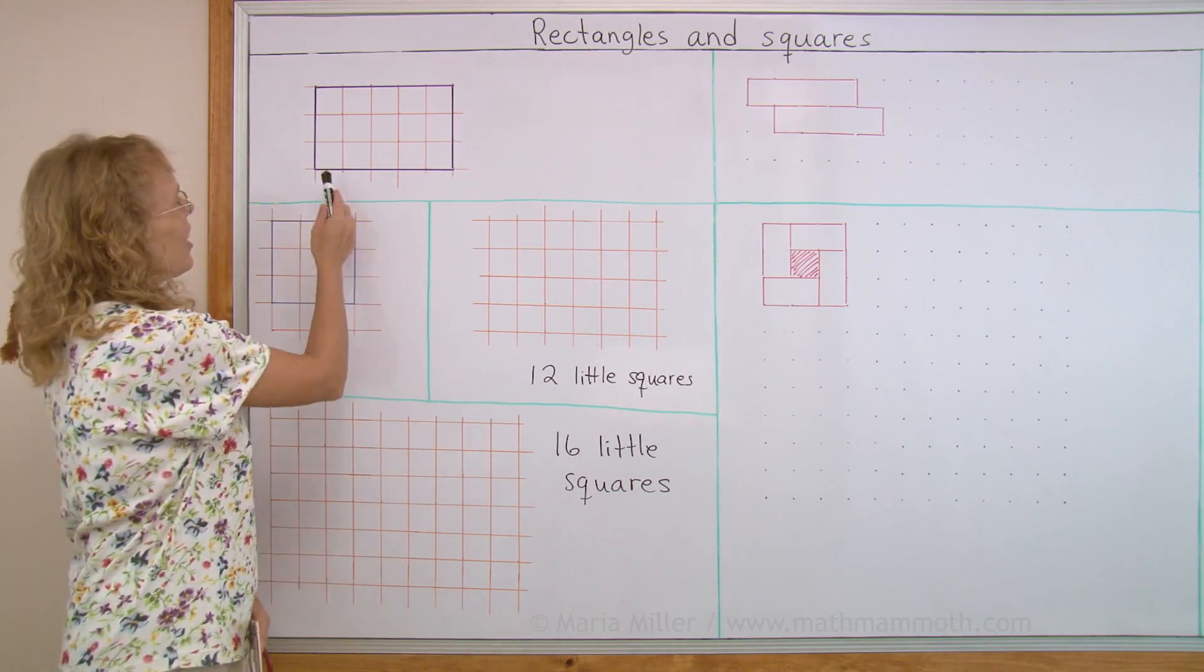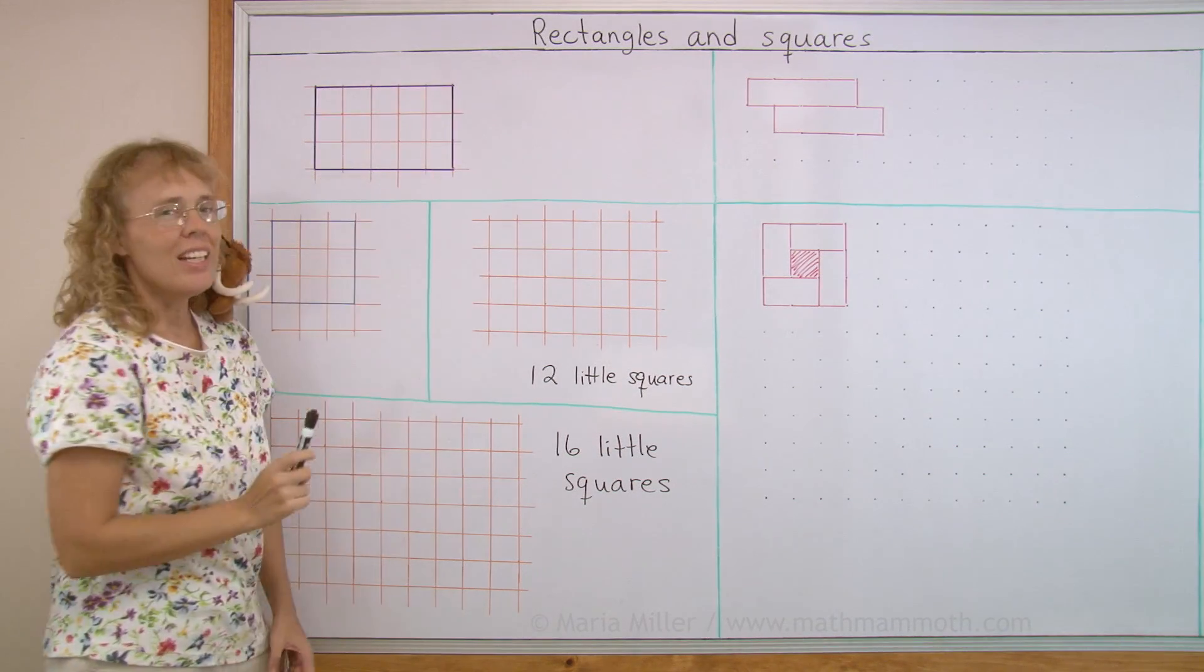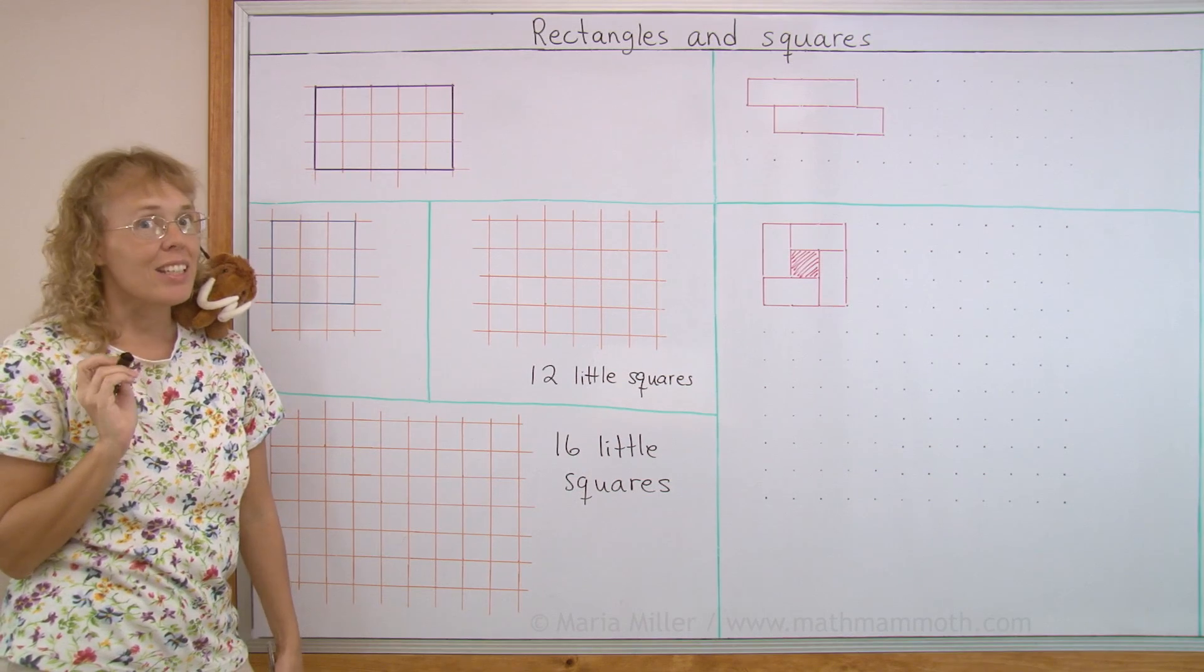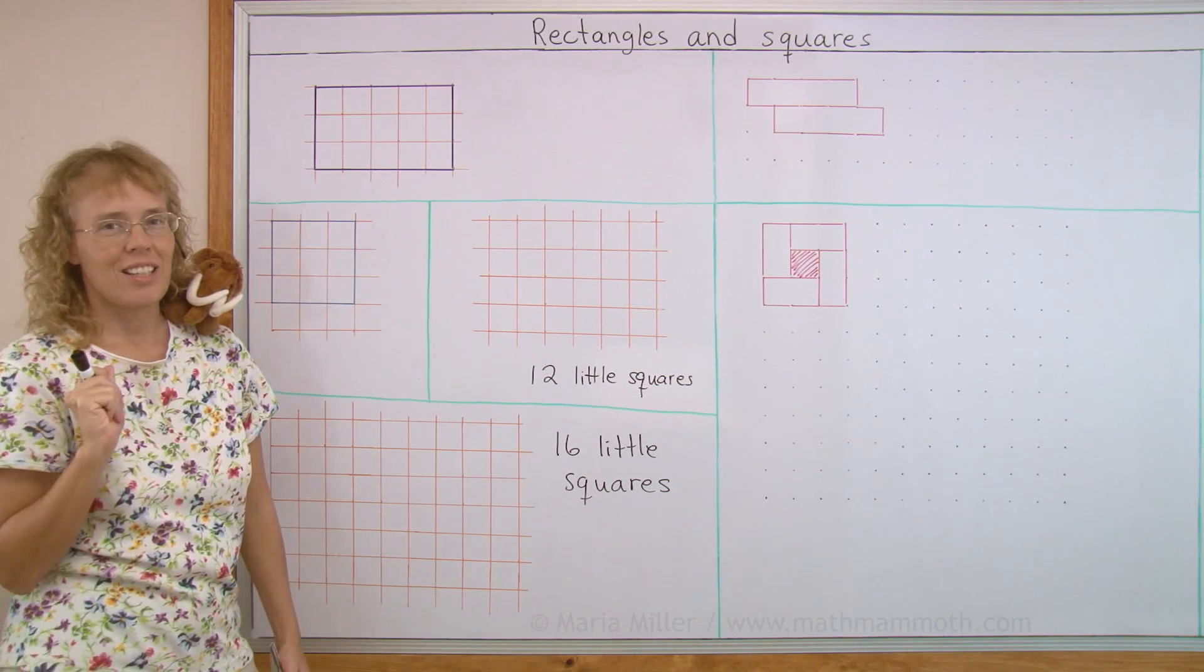First of all, I have here a big purple rectangle like that. And you see inside it are many little squares. We're going to count how many little squares are there inside it.